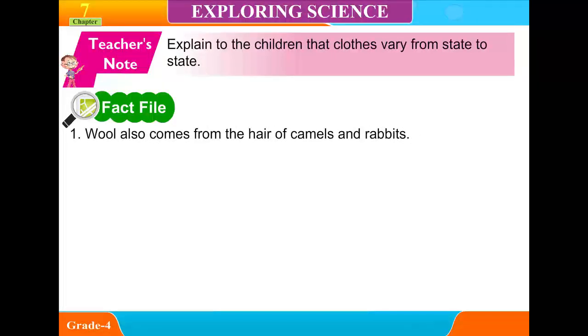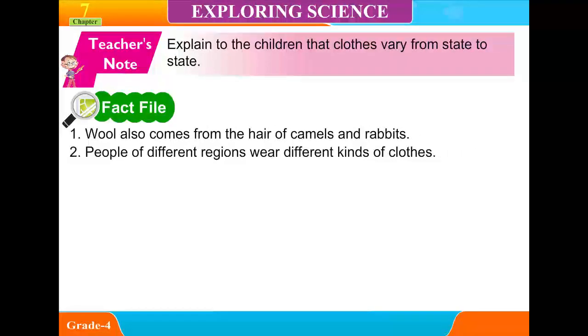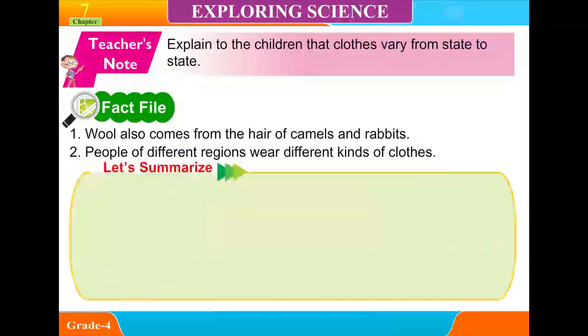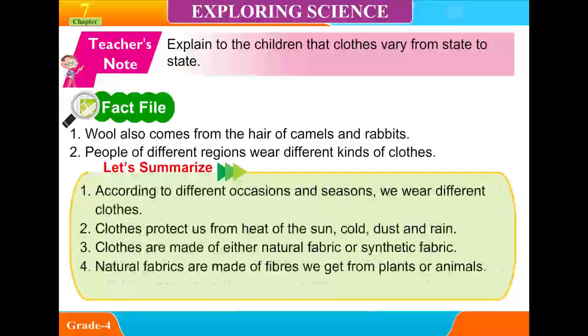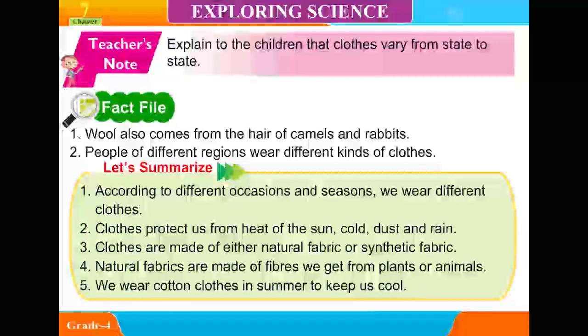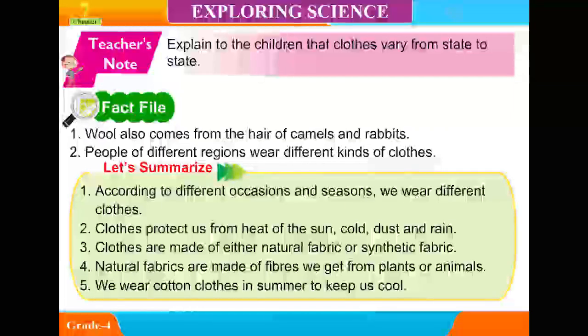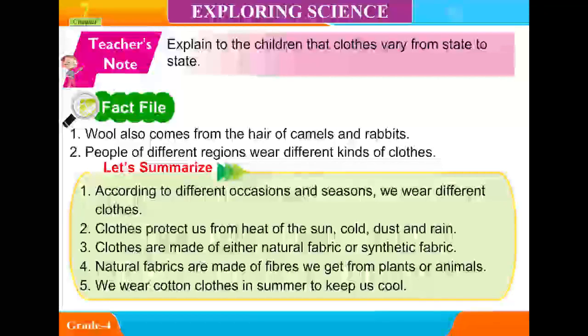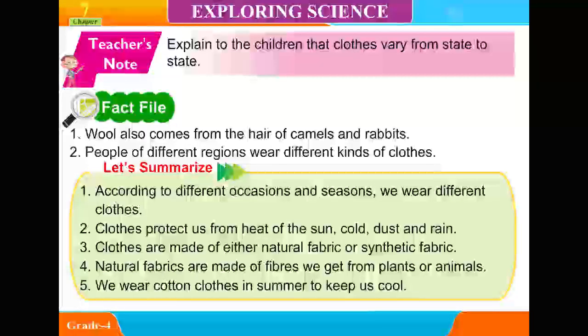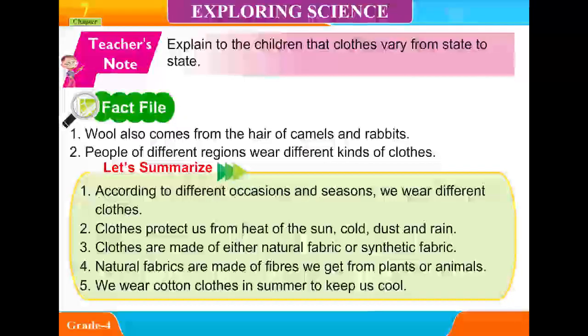Teacher's note: explain to the children that clothes vary from state to state. Facts file: wool also comes from the hair of camels and rabbits. People of different regions wear different kinds of clothes. Let's summarize: according to different occasions and seasons, we wear different clothes. Clothes protect us from the heat of the sun, cold, dust, and rain. Clothes are made of either natural fabric or synthetic fabric. Natural fabrics are made of fibers we get from plants or animals. We wear cotton clothes in summer to keep us cool.